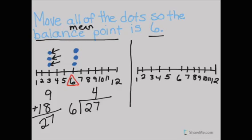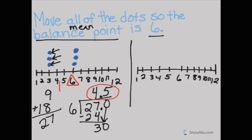So I'm going to divide twenty-seven by the number of dots, or the number of numbers. Six goes into twenty-seven four times. Four times six is twenty-four. Twenty-seven minus twenty-four is three. I'm going to add a decimal point zero, and six goes into thirty evenly five times. So right now my balance point is actually four point five.